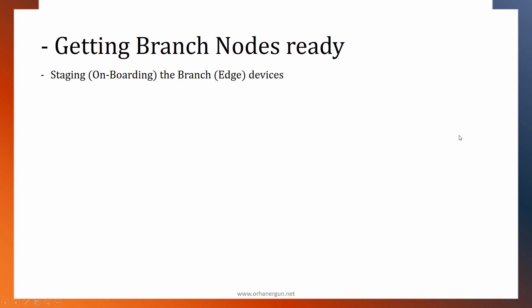After getting those control nodes ready, we reach the branch nodes. We need to onboard or do staging for the branch or edge devices. I will show you in detail how to get these devices ready and make them part of the SD-WAN network.